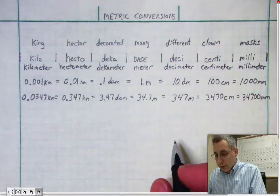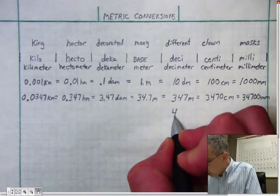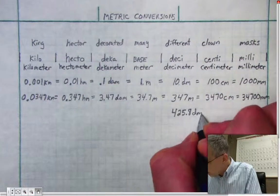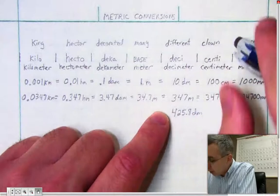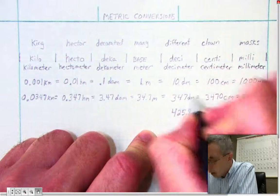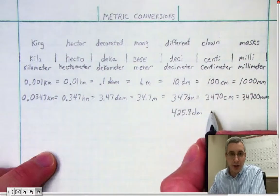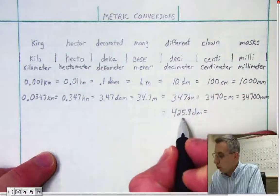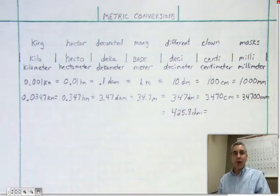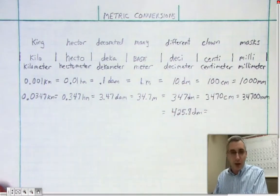Now I'd like you to try one. Let's say you're told that you have 425.8 decimeters. And I just noticed I made a small mistake on this column right here - I wrote an m and that should be dm for decimeter. Sorry about that. And what I would like you to do now is to convert 425.8 decimeters into all of these other units that you see on the page. So I want you to press pause on the video please, and do that conversion - fill in all of these columns - and then press play and check it.